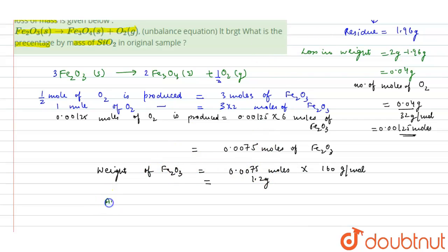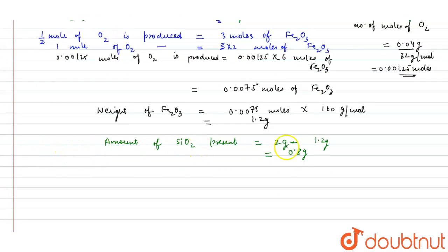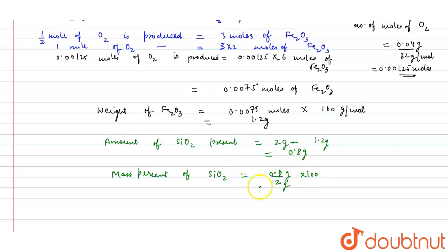Now we can calculate the weight of silica present: 2 grams minus 1.2 grams, since the total sample is 2 grams and Fe2O3 present is 1.2 grams, giving 0.8 grams. But we need the mass percentage, so the mass percent of silica is 0.8 grams divided by 2 grams multiplied by 100.